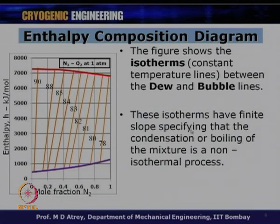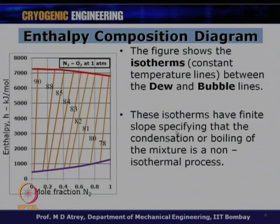These isotherms have a finite slope, meaning they are not vertical lines. Isotherms with finite slope specify that the condensation or boiling of the mixture is a non-isothermal process. During this phase transformation from vapor to liquid, the temperature decreases — and that is what you can see from the inclined isotherm lines.